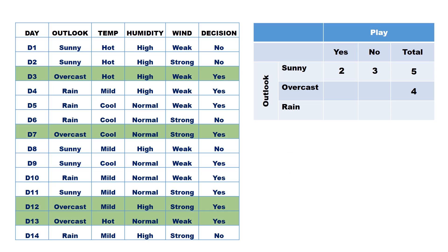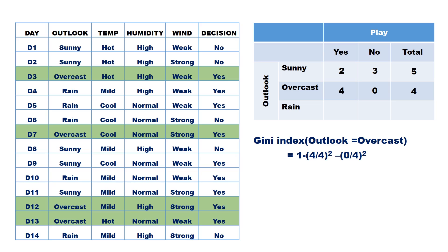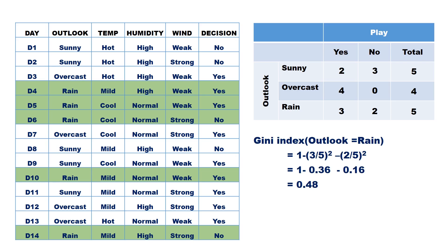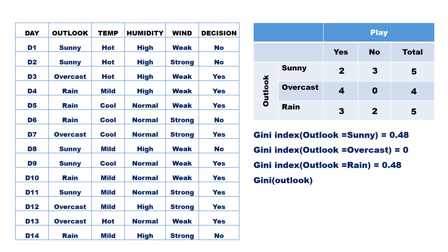There are four records with outlook equal to overcast; all four are yes. Hence, the Gini index for outlook=overcast is 1 minus (4/4)² minus (0/4)², which equals 0. Five records have outlook equal to rain: three are yes and two are no. The Gini index for outlook=rain is 1 minus (3/5)² minus (2/5)², which equals 0.48. The Gini index for the attribute Outlook is the weighted sum: (5/14)×0.48 + (4/14)×0 + (5/14)×0.48, which equals 0.342.